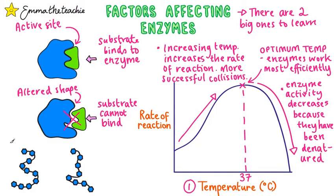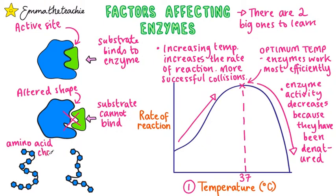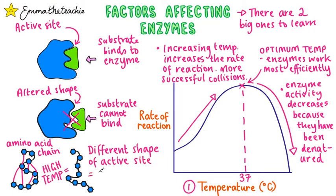Enzymes are made from chains of amino acids that have been folded to give them their specific shape. This structure is held together by weak forces between the amino acids. High temperatures can break these forces, causing the amino acid chains to change shape. This alters the shape of the active site — which we call denatured. When the enzyme is denatured, substrate molecules can no longer bind to the active site and the reaction will slow down or stop altogether.